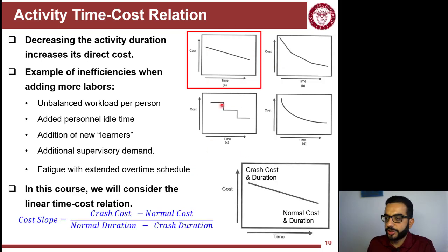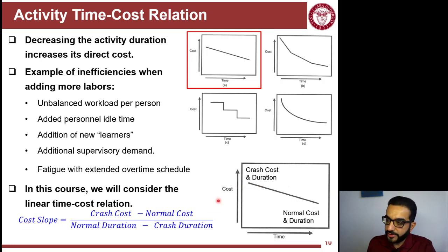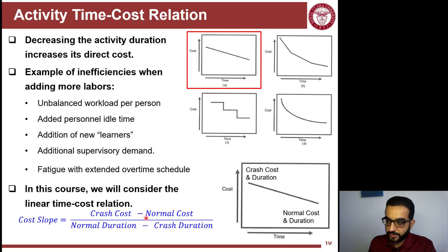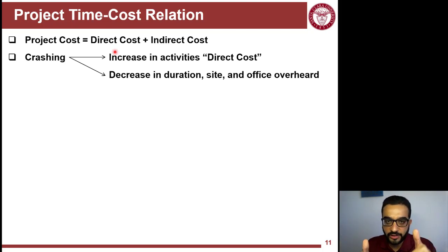Following the linear approach: for each activity, you are given normal duration and corresponding normal cost, plus the crash duration and resulting crash cost. This produces a cost slope — the difference between crash cost and normal cost divided by the difference between normal duration and crash duration. Note the flip in the fraction: crash cost is higher than normal cost, but normal duration is longer than crash duration. The more you squeeze the activity duration, the more cost you incur.